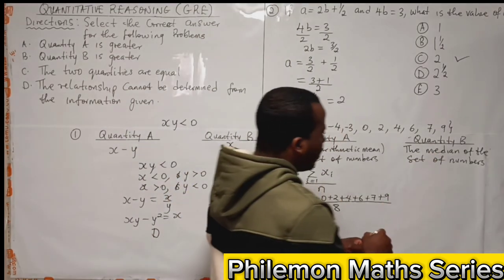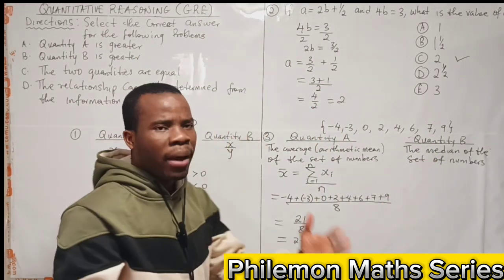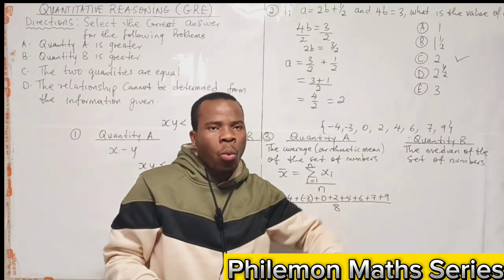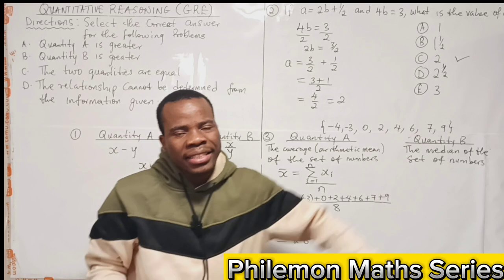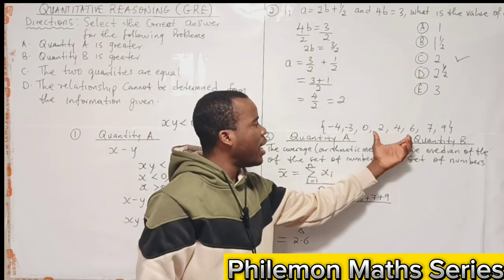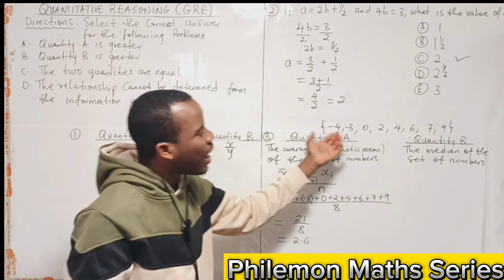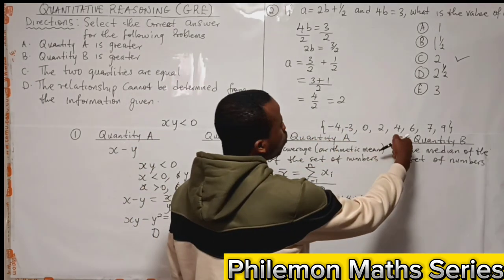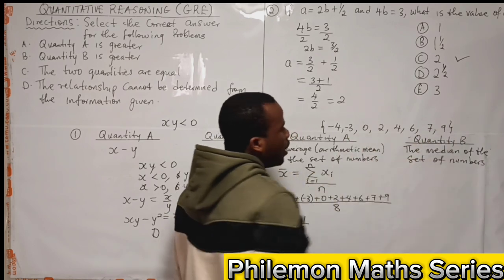So to get the median of the set of numbers, remember the median is the number in the middle when the set of numbers are arranged in either ascending order or descending order. The numbers we already have are arranged in ascending order, so to get the median we look for the middle numbers.